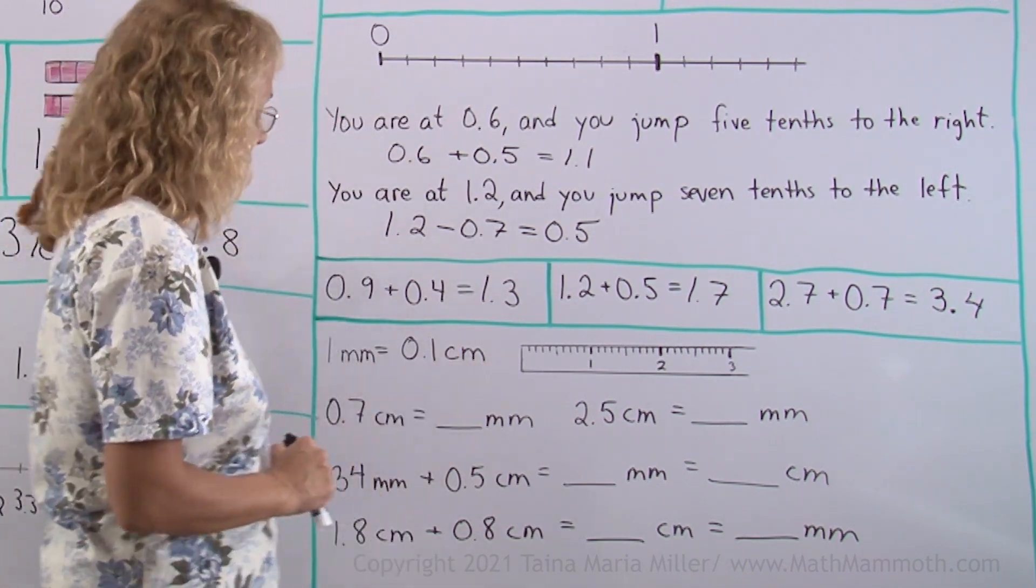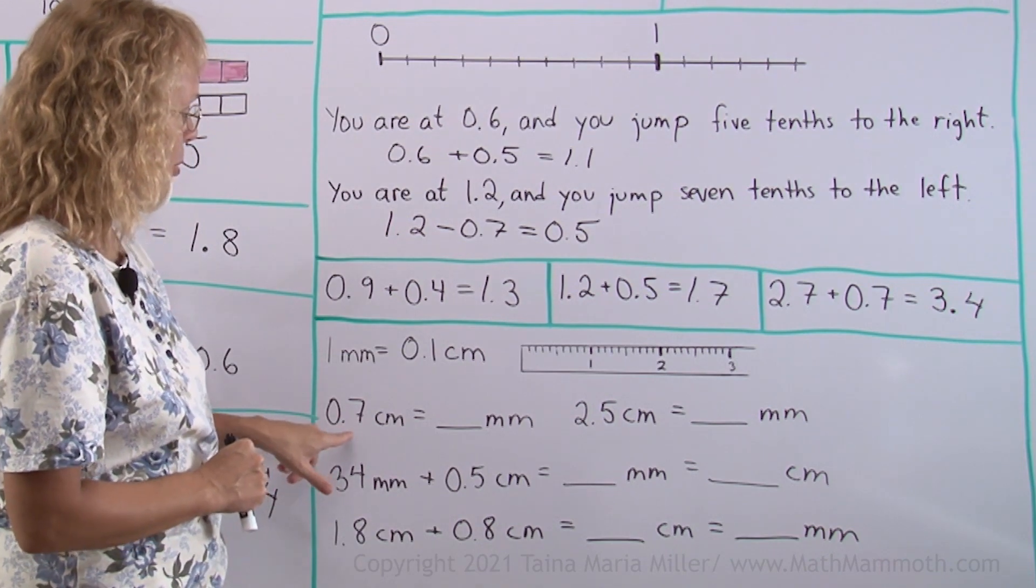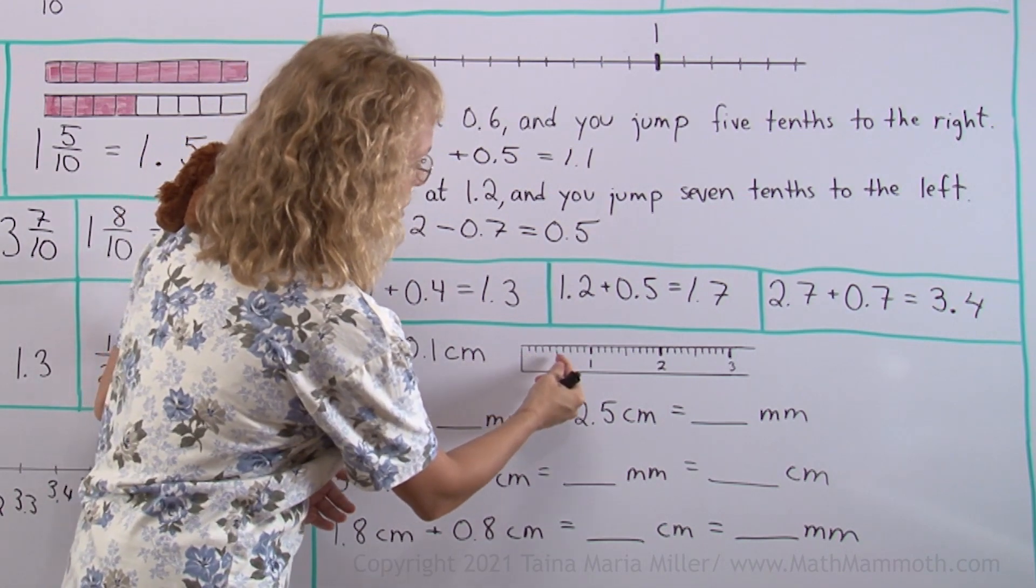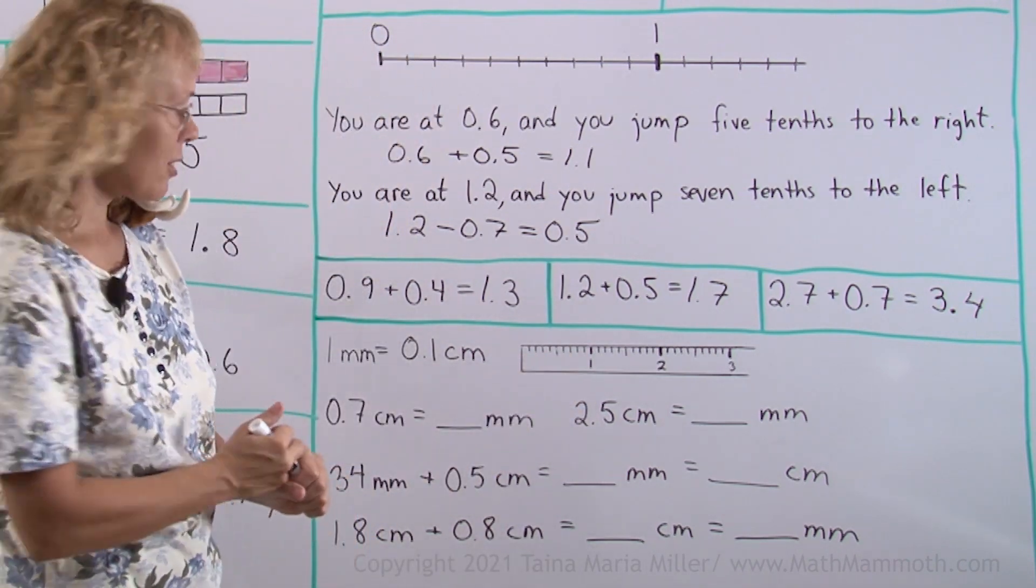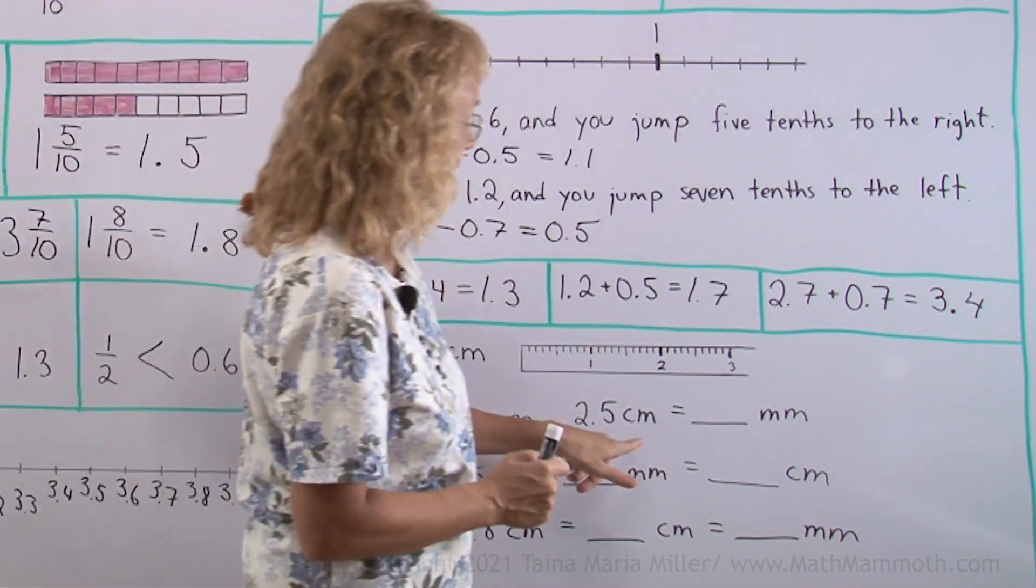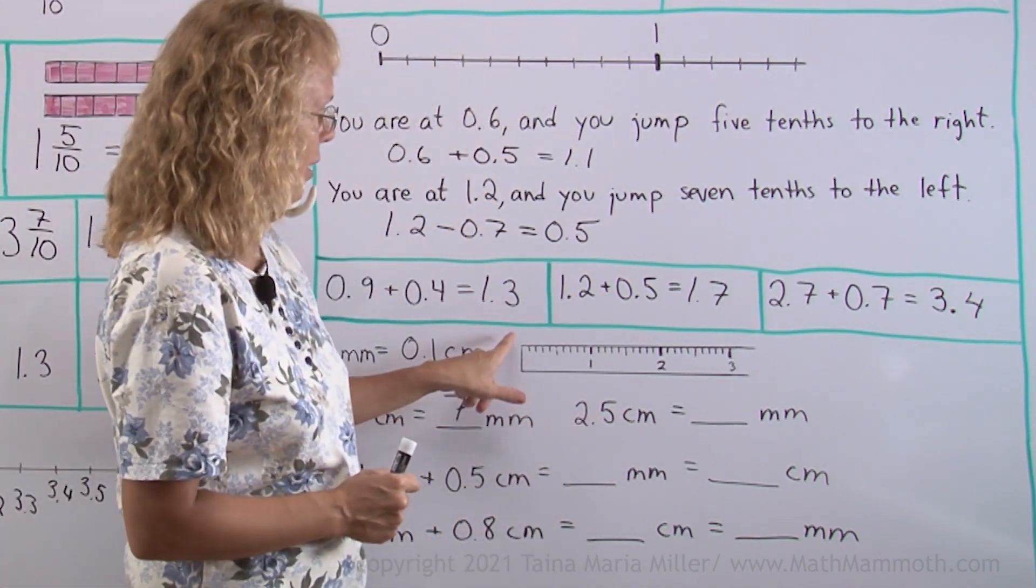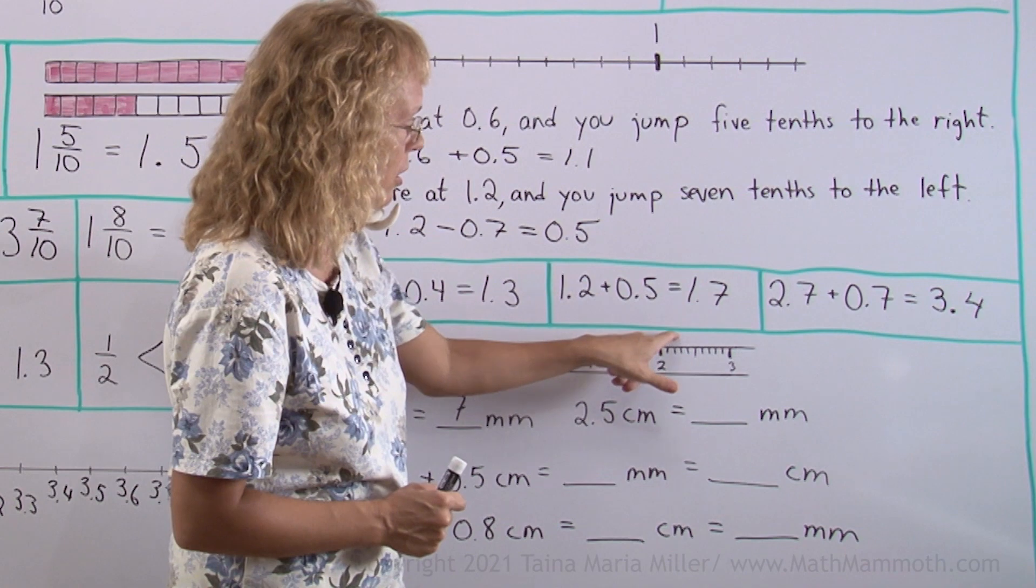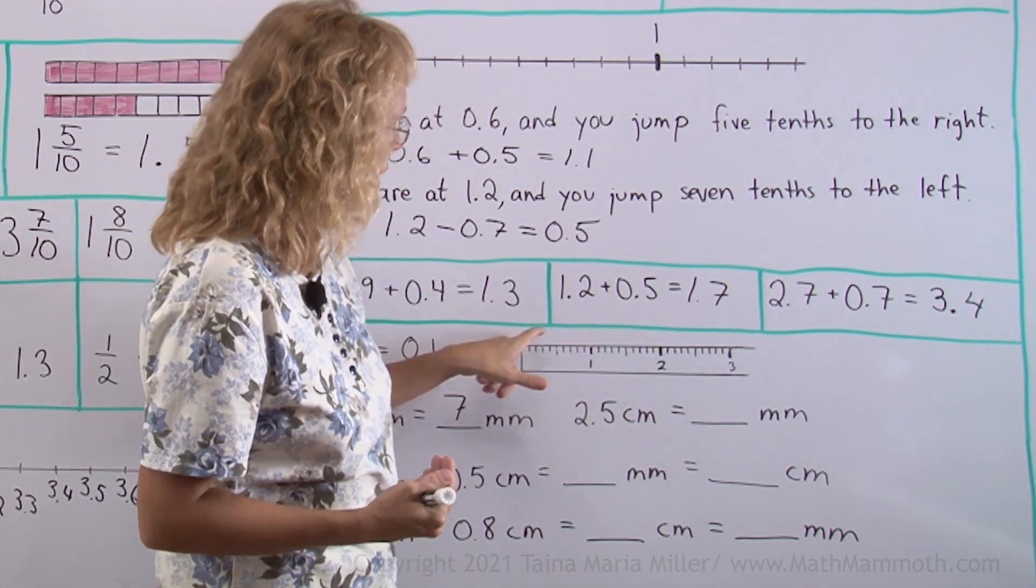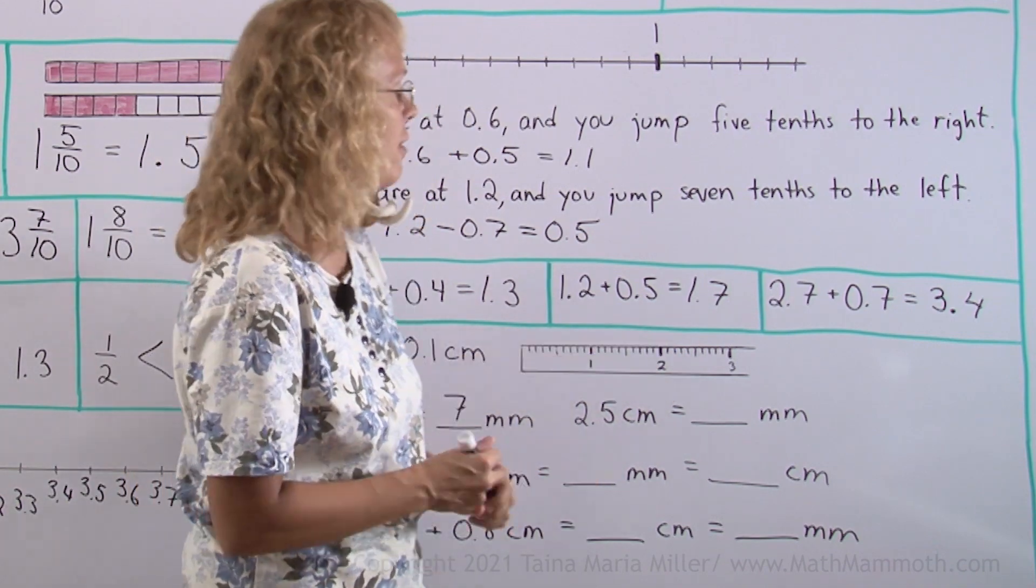Let's work with those a little. I have here 0.7 centimeters, or 7 tenths of a centimeter. It would go here all the way here. It is 7 millimeters. Now 2.5 centimeters. Okay. It would be here. 2 centimeters. And then 0.5 centimeters, or 5 millimeters more. In total, that would be 25 millimeters.